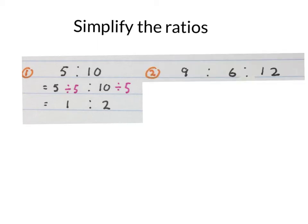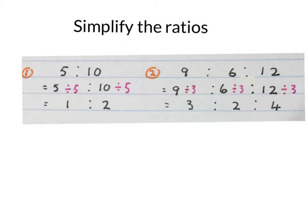Now we simplify the ratio 9 to 6 to 12. The highest common factor that can divide into all three of them is 3. So our simplified answer will be 3 to 2 to 4.